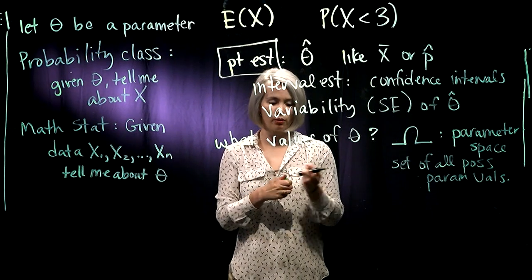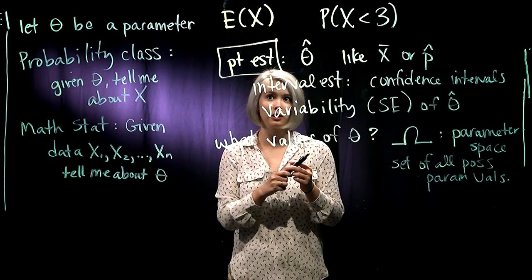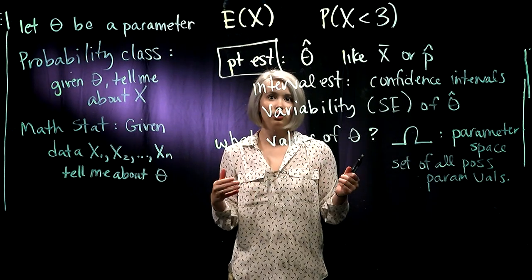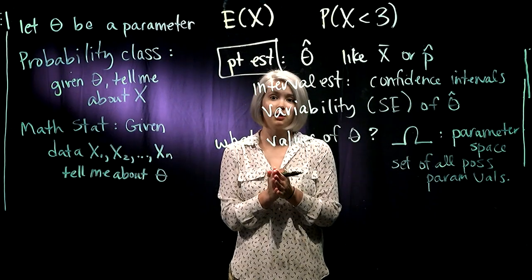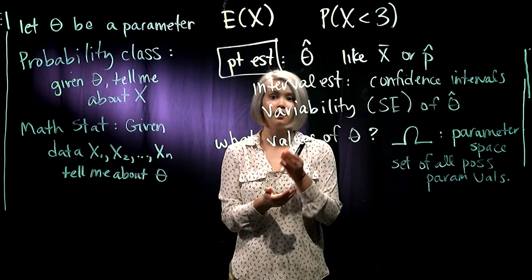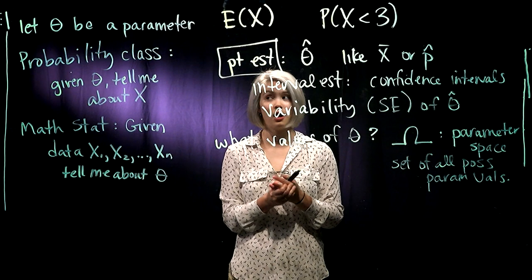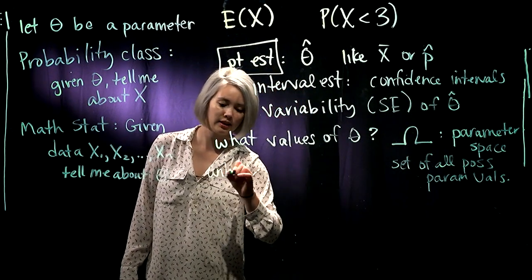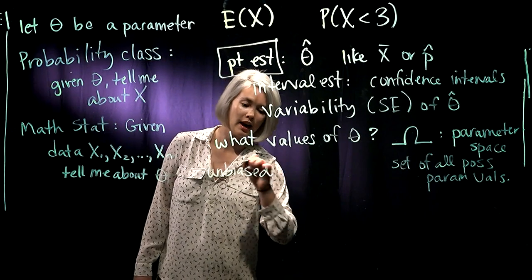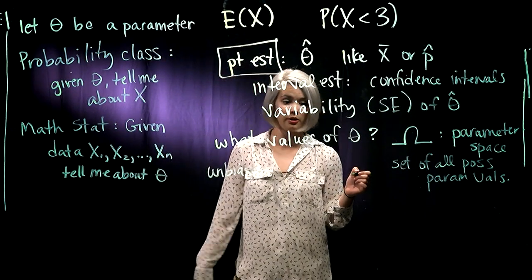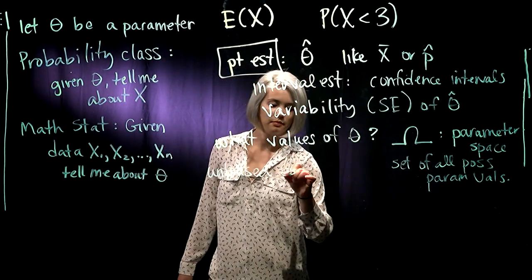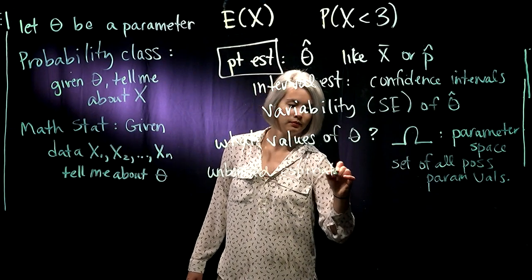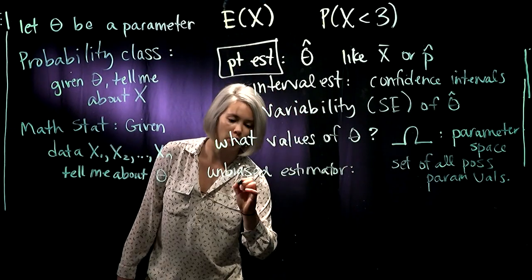Another thing that's important to know before we get into point estimation: we need to see, is our point estimate, on average, going to be estimating our parameter? We call this an unbiased estimator if it does, on average, estimate our parameter.